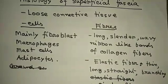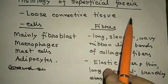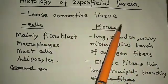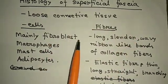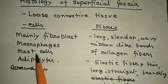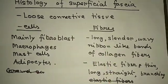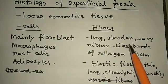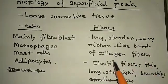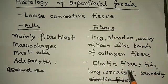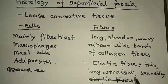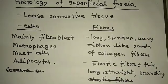Now the histology of the superficial fascia: it is formed by loose connective tissue containing mainly fibroblasts, macrophages, mast cells, and adipocytes. Fibers include long, slender, wavy, ribbon-like bands of collagen fiber; elastic fibers that are thin, long, straight, and branching; and reticular fibers.